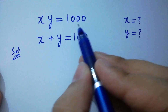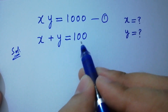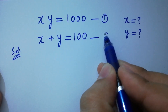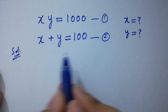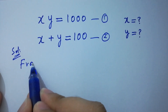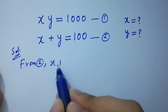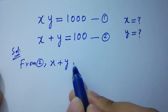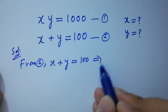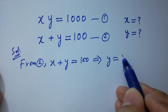Let xy equal to 1000 be the first equation and x plus y equal to 100 be the second equation. From the second equation, x plus y equals 100, so y equals 100 minus x.